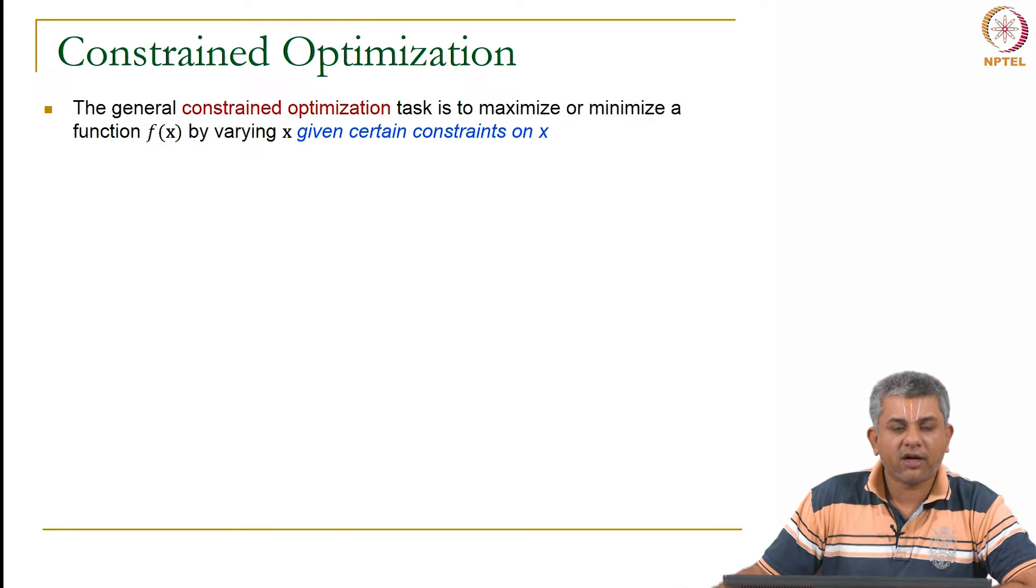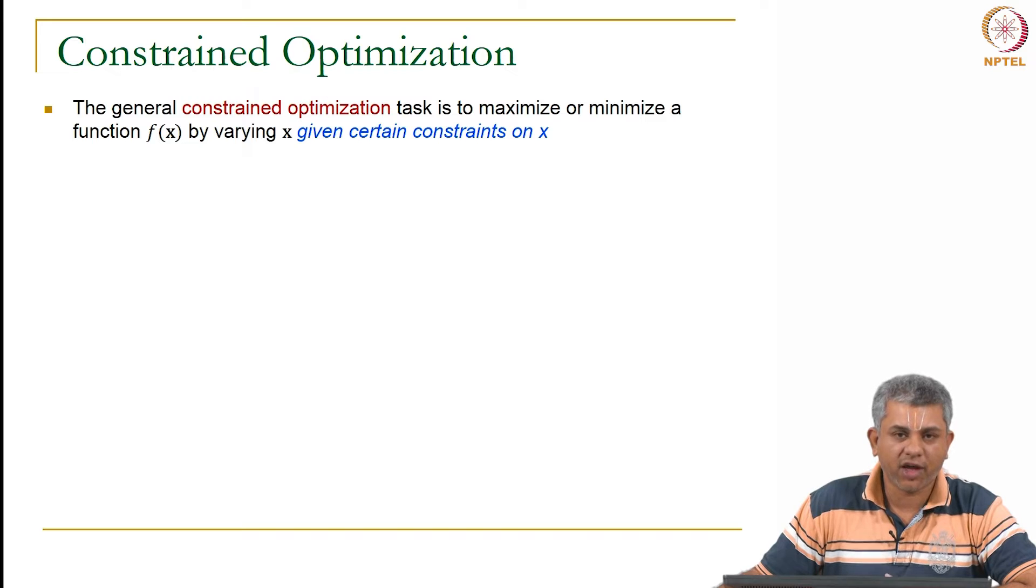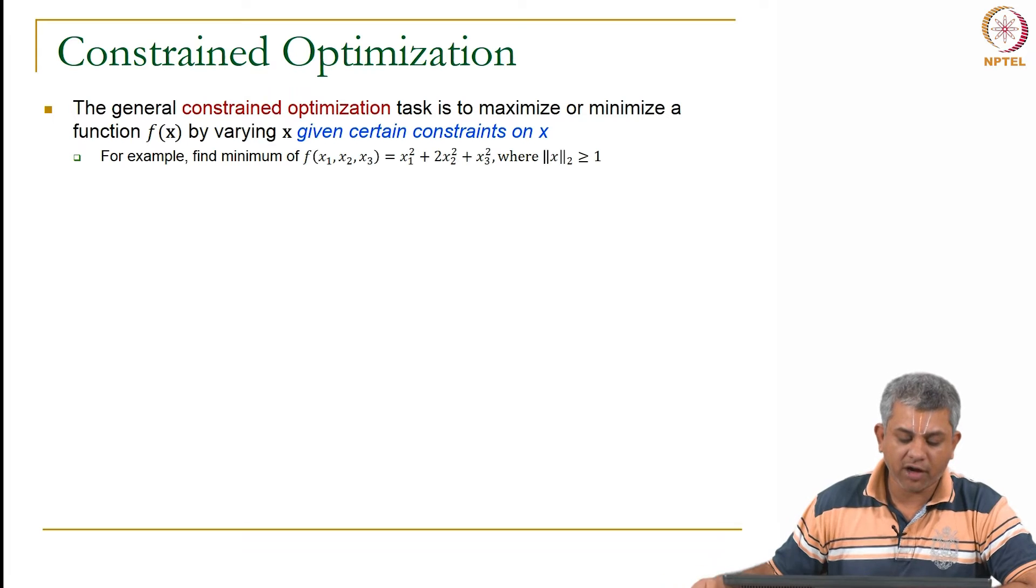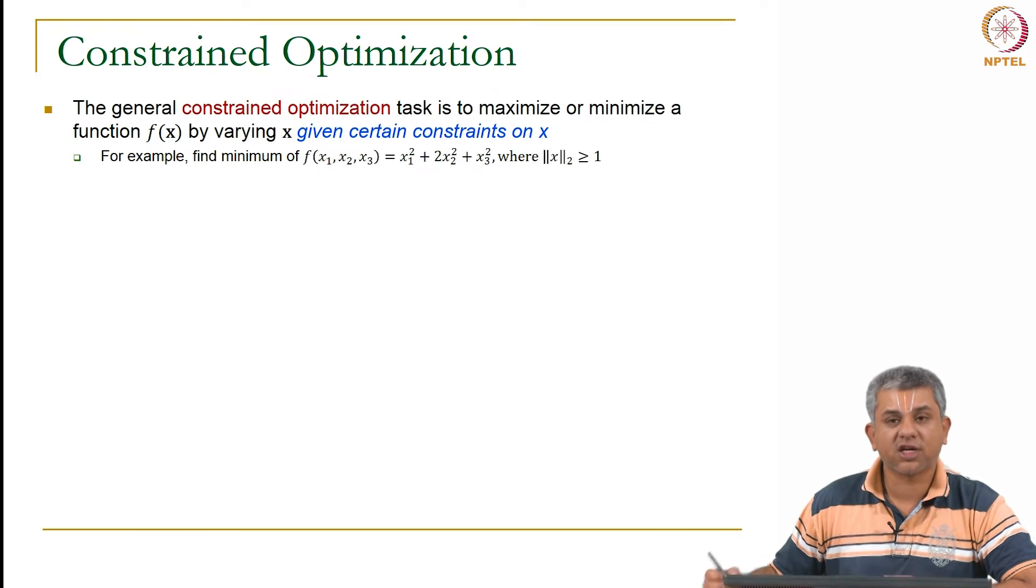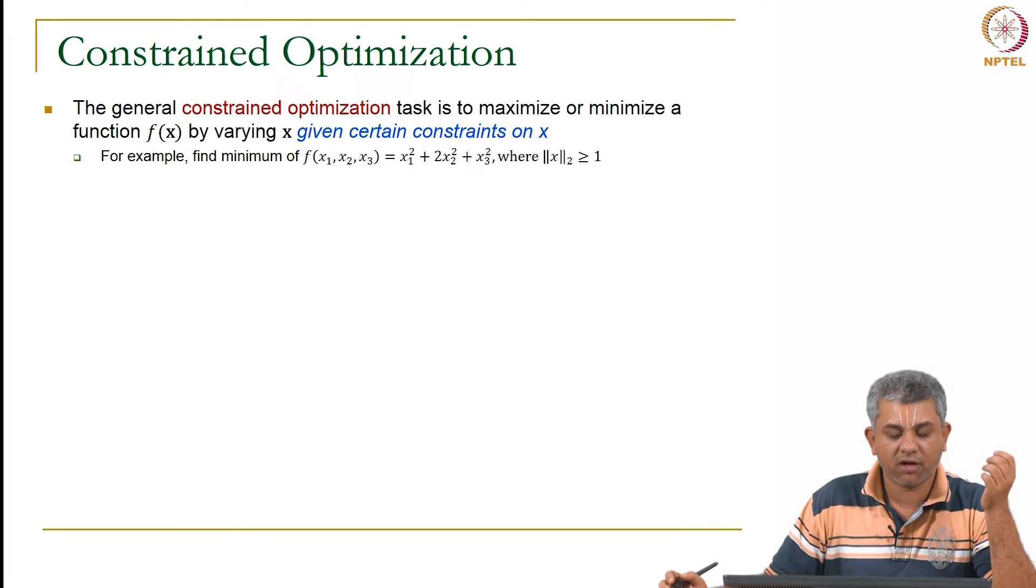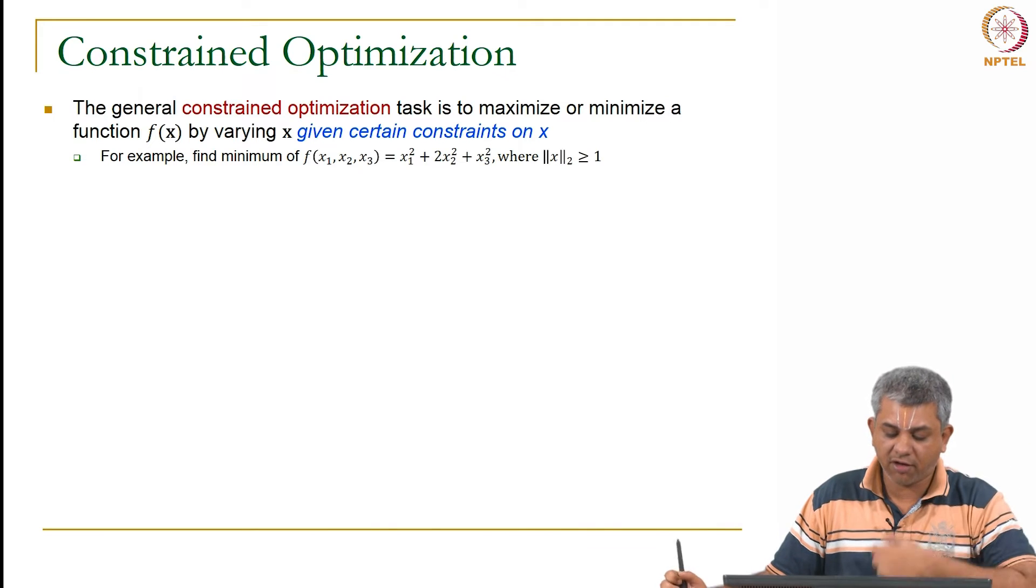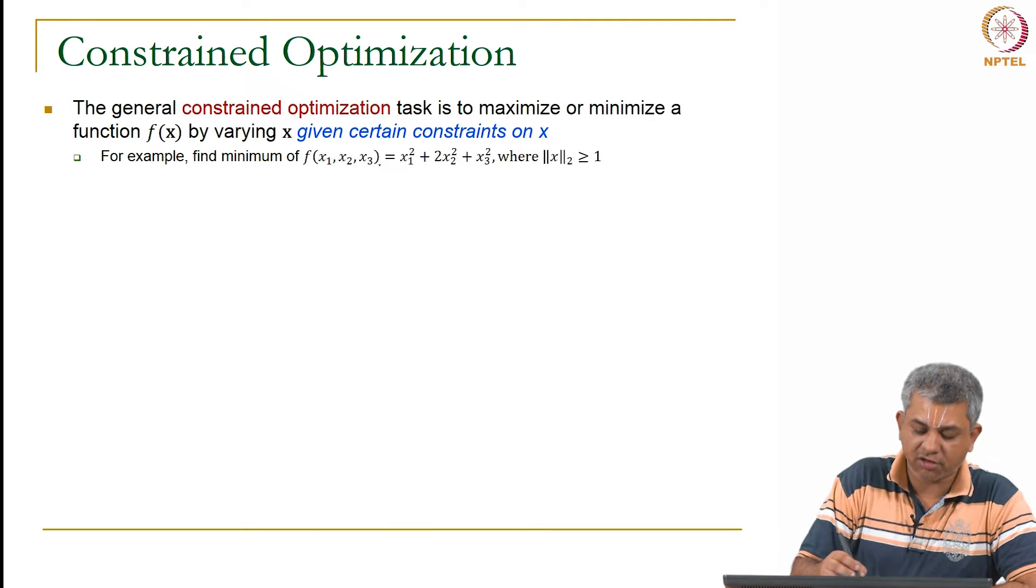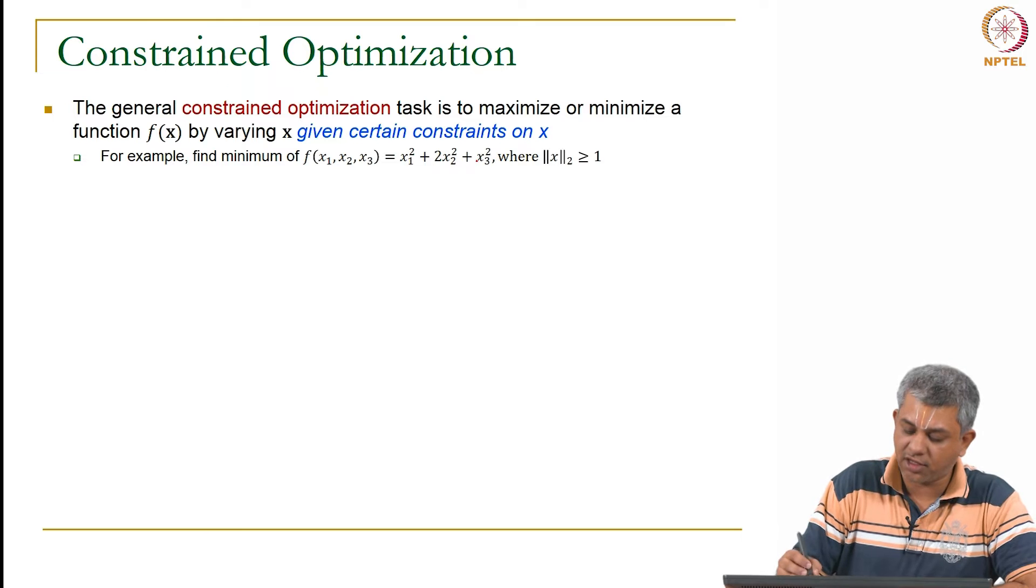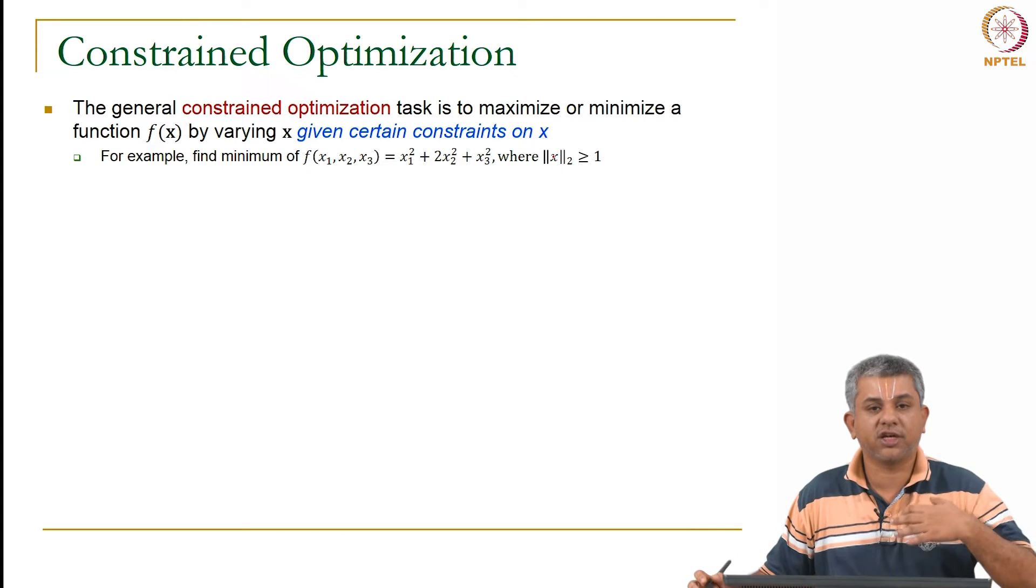So unlike unconstrained optimization where you find the minimum of f(x) for any x, for the constrained optimization task you find f(x) for certain constraints given on x. For example, you could find the minimum of the function f(x₁, x₂, x₃) where the norm of x is greater than 1.